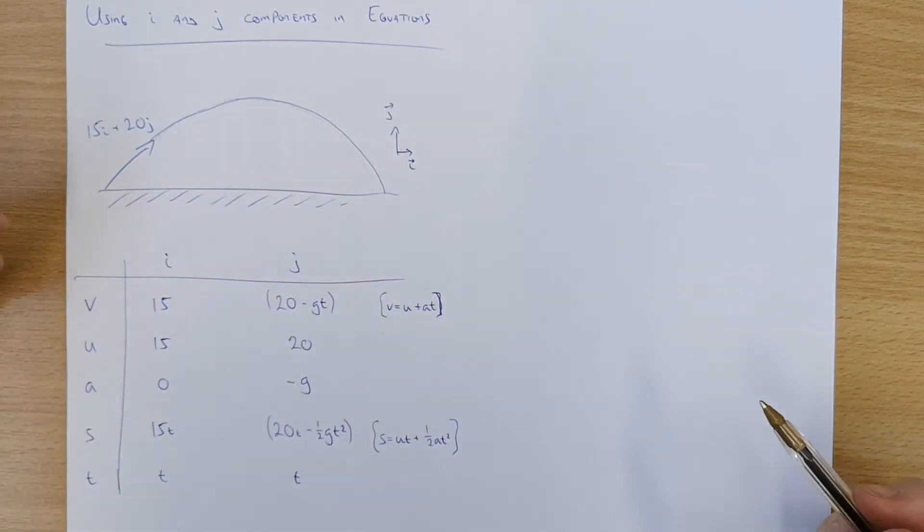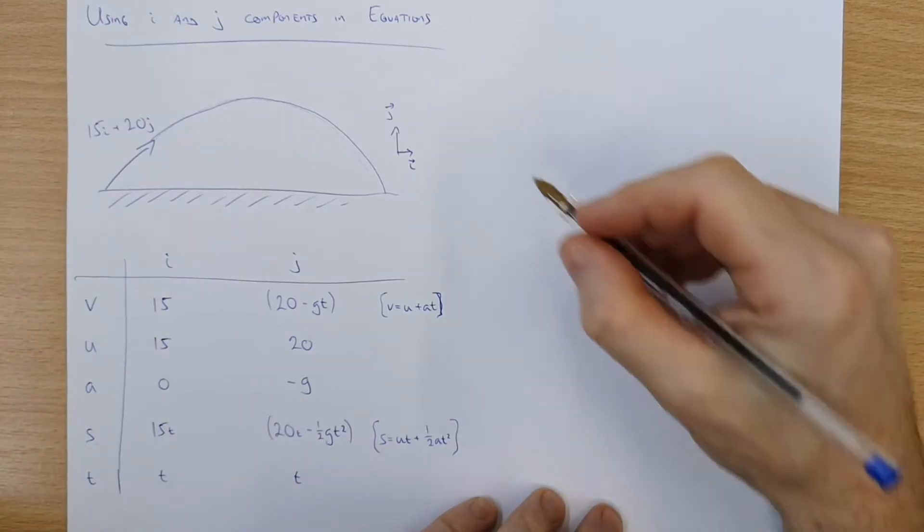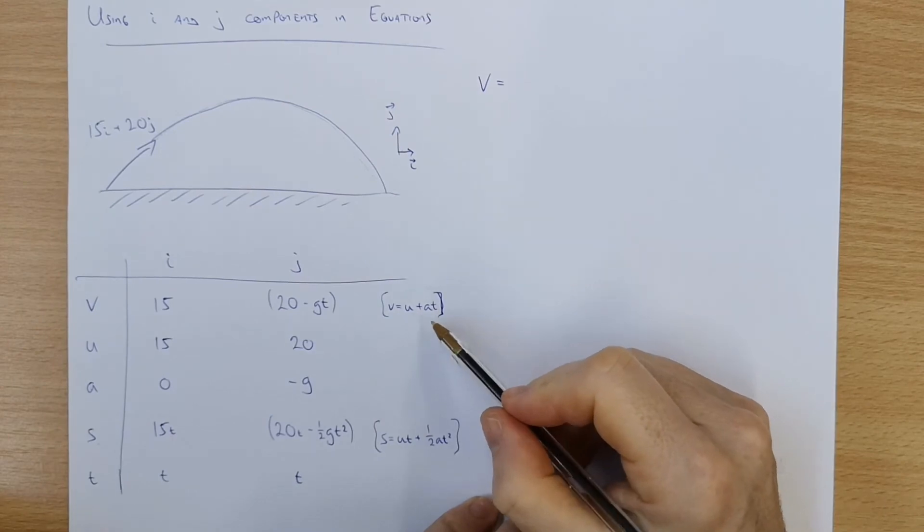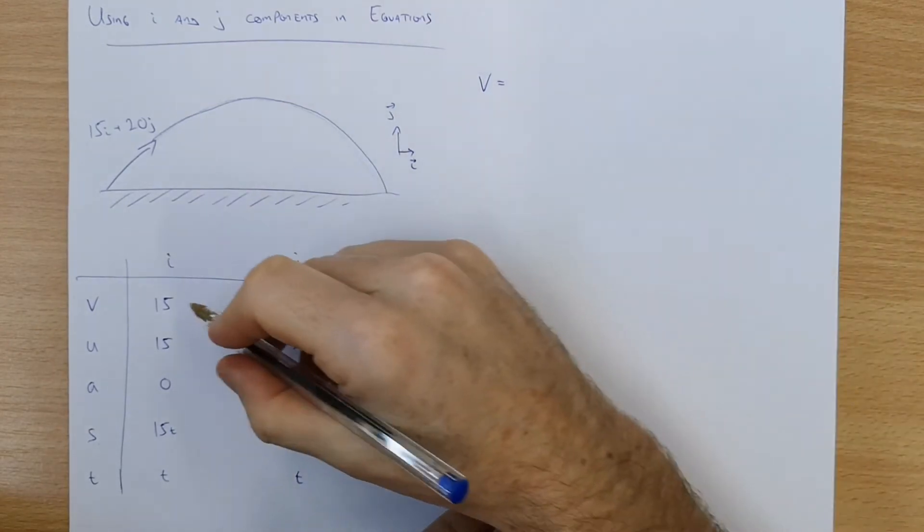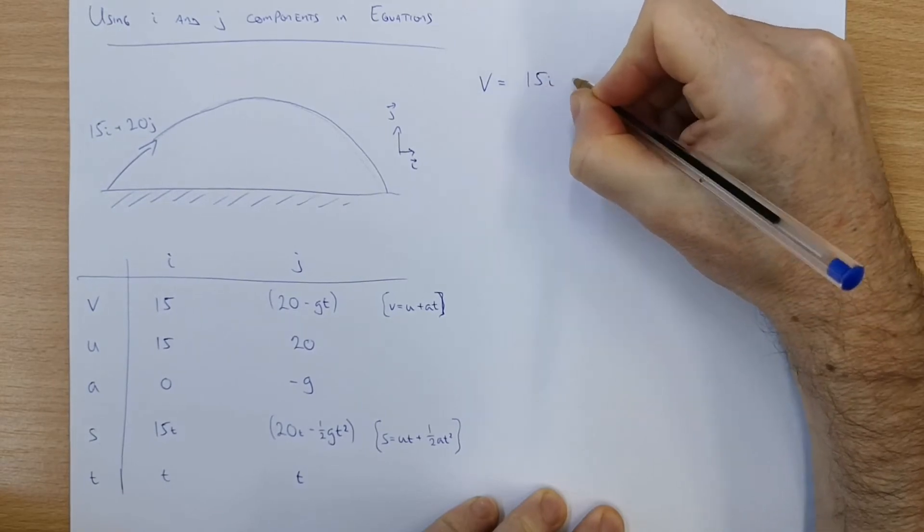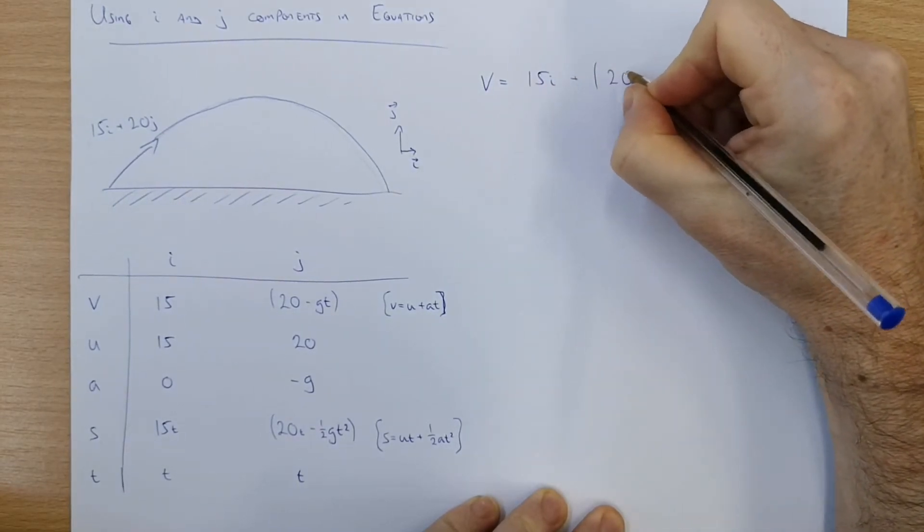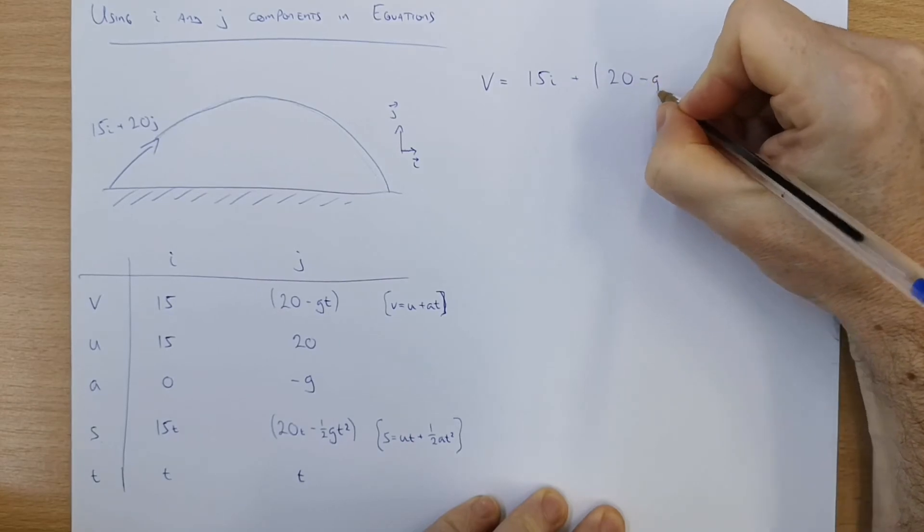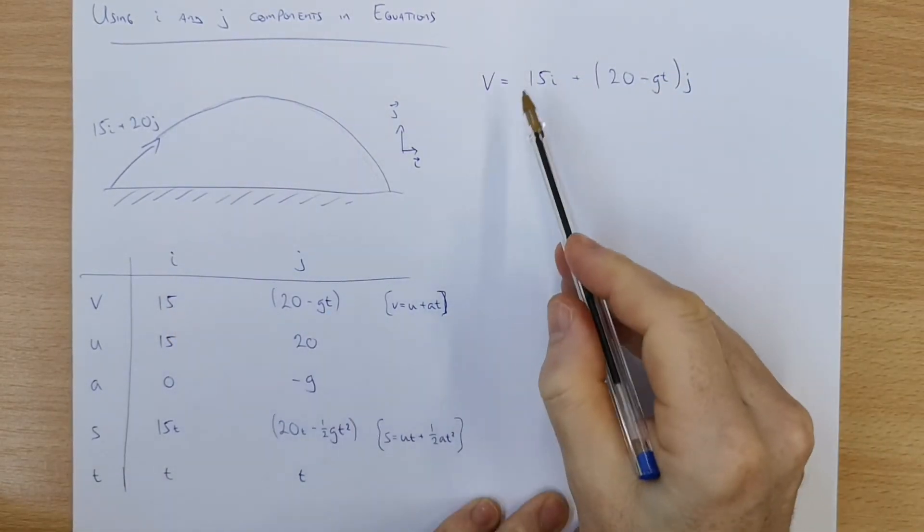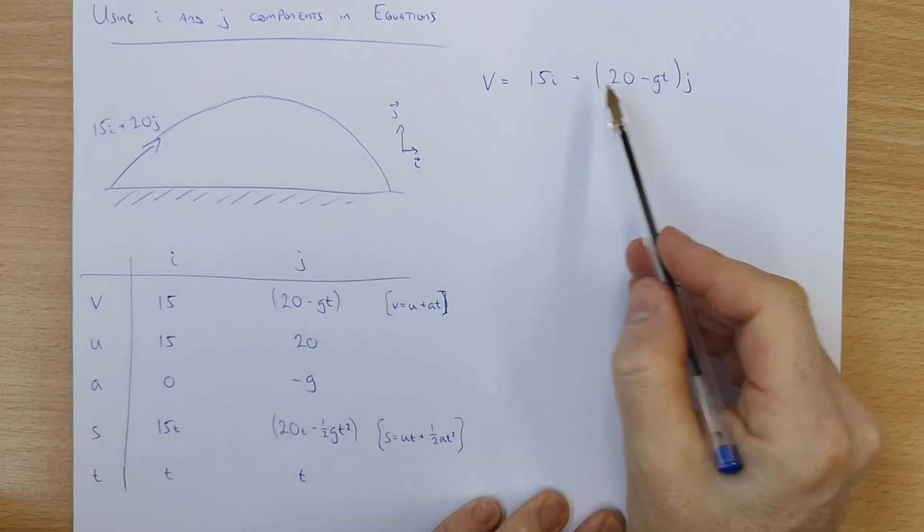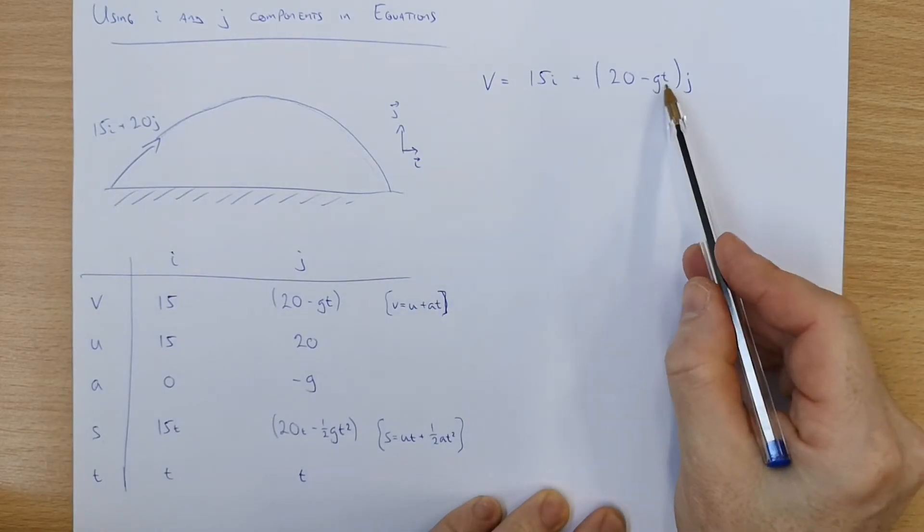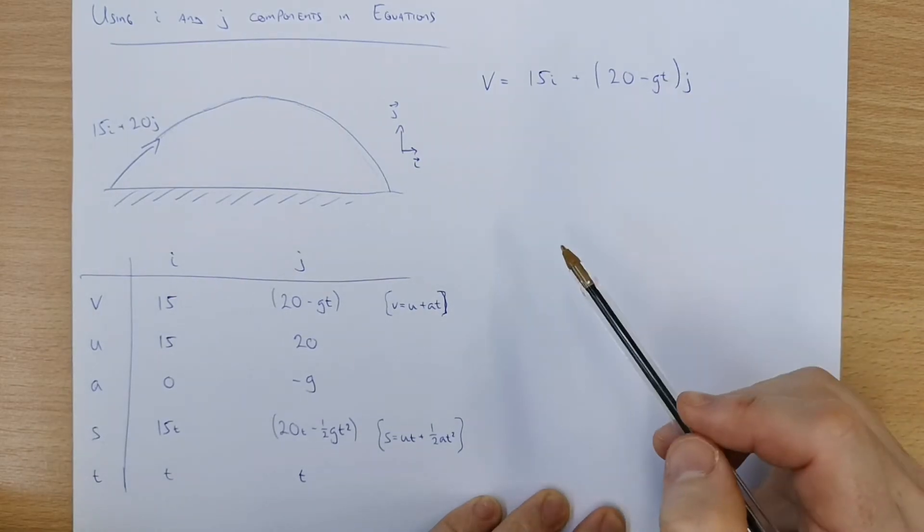So let's say we're asked to look at the velocity in terms of i's and j's. So we can write the equation for velocity here. Again using v equals u plus at. So the velocity is 15i plus 20 minus gt, j. So we just brought each of these components up here and now that is a little equation for the velocity at any point in time. Remember g is a constant so time is the only variable here.